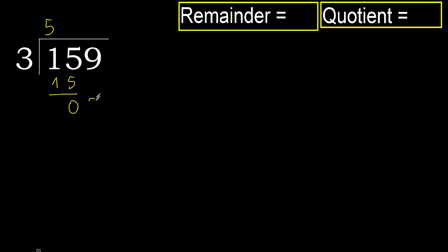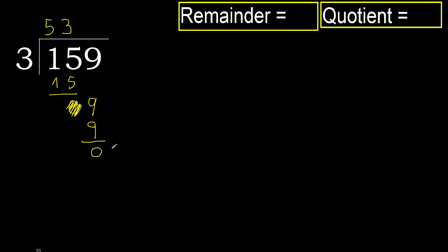15 minus 15 is 0. Bring down 9. 3 multiplied by 4 is greater. 3 multiplied by 3 is 9 — not greater. Subtract, remainder 0. Therefore finished.